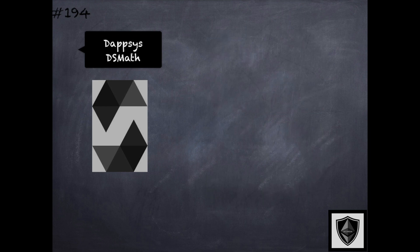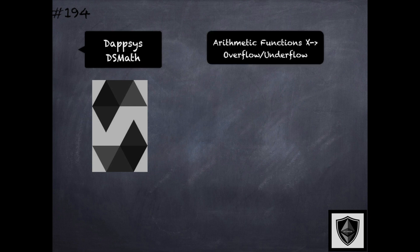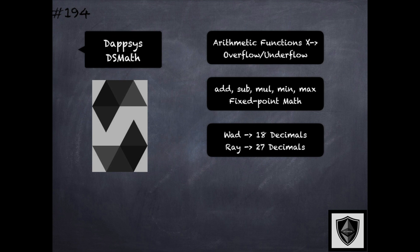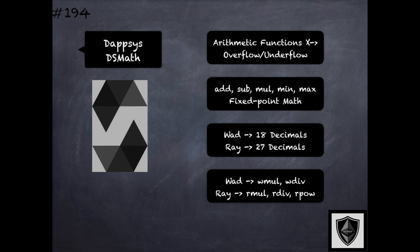DapSys provides a DS math library with arithmetic functions. The first set are arithmetic functions that can be safely used without the risk of underflow and overflow, equivalent to OpenZeppelin's safe math library, including add, sub, and mul functions. There is no div function because the Solidity compiler has built-in divide-by-zero checking. DS math also provides support for fixed-point math, introducing two new types: the WAD type for decimal numbers with 18 digits of precision, and the RAY type for decimal numbers with 27 digits of precision, with various functions for operating on these types.